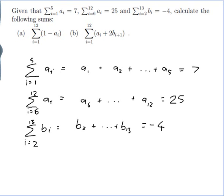and the sum of bi from 2 to 13 is minus 4. So somewhere there's a list of what all those numbers from a1 up to a12 and from b2 up to b13 actually stand for. We haven't got that list, but we do have what these sums are. Now let's try part a.